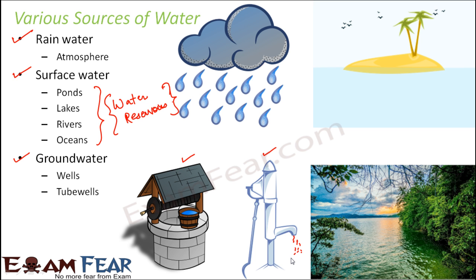So these are some common sources of water. Now, if water is becoming scarce, there can be two possibilities. One possibility is that one or more of these sources have vanished, or we do not have a sufficient number of ponds, lakes, rivers, wells, or sufficient rainfall — meaning insufficient sources. The other possibility is that the sources of water are enough, but the demand for water is even greater. These are the only two options that can cause water scarcity. Let us try to understand what exactly causes it.